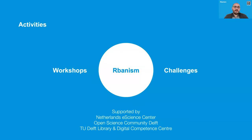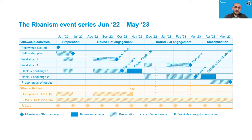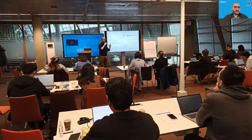These activities are supported by the Netherlands eScience Center, the Open Science Community Delft, the TU Delft Library and Digital Competence Center. We are putting our growing community on a sustainable trajectory beyond this support through an extensive community engagement strategy. The first series of events focused on reproducibility: a one-day carpentry-style workshop, a half-day repro hack where participants reproduced published papers, and a challenge where researchers submitted ongoing research for a reproducibility check and competed for a prize.